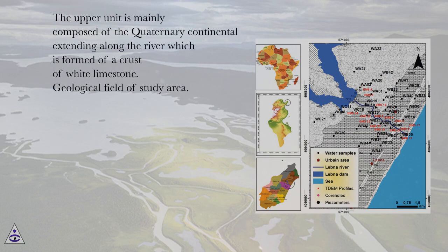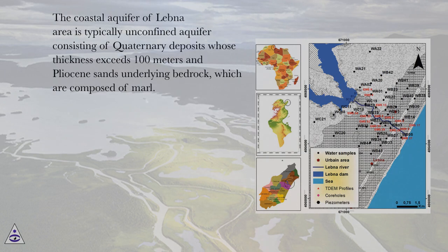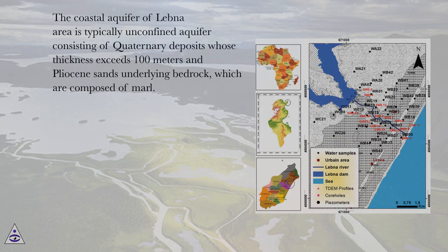The coastal aquifer of the Lebna area is a typically unconfined aquifer consisting of quaternary deposits whose thickness exceeds 100 meters, and Pliocene sands underlain by bedrock composed of marl.